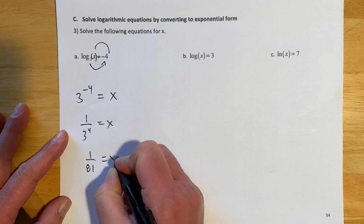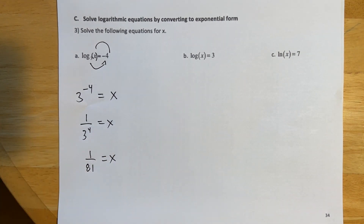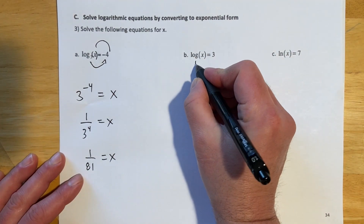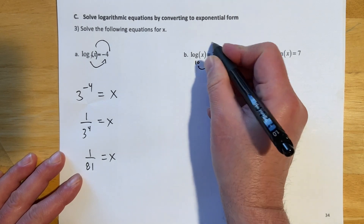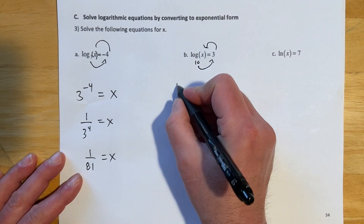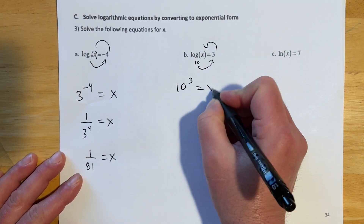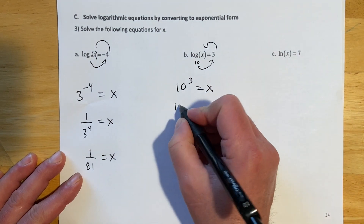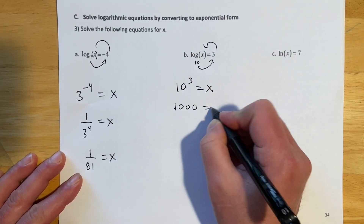For the one with no base written, the invisible 10 gives 10^3 = x, and 10^3 is 1000 — the one with three zeros.